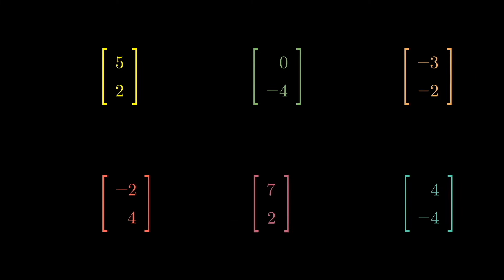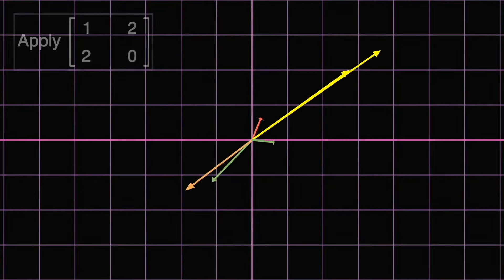How about we try to do this with more vectors? Once again, we can represent the vectors as six physical arrows and observe their movements as they get multiplied by the matrix.